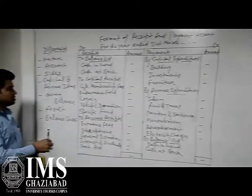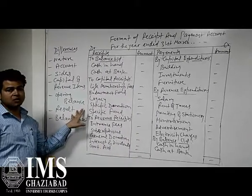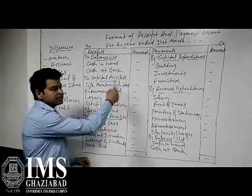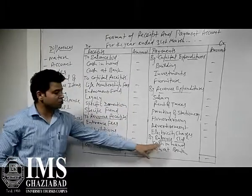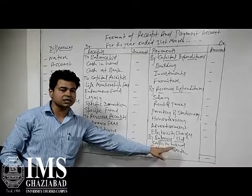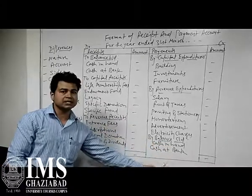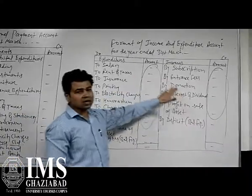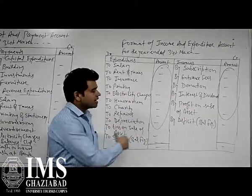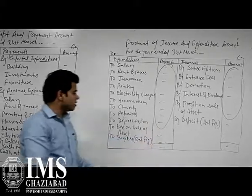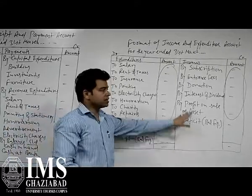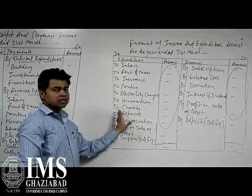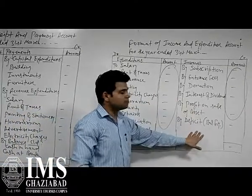The next point of difference is the end result. After making the Receipts and Payment Account, we get a closing balance of cash in hand and cash at bank. Whereas the Income and Expenditure Account does not show a closing balance — it shows profit or loss. If the credit side is more than the debit side, the difference is a surplus (profit). If the debit side is more, the difference is a deficit (loss).